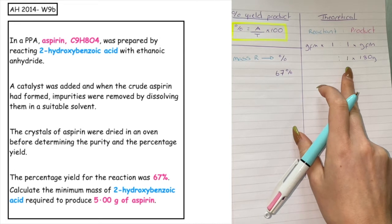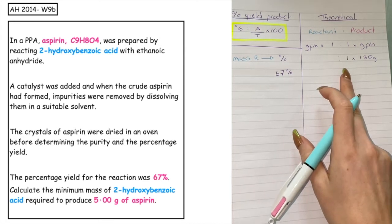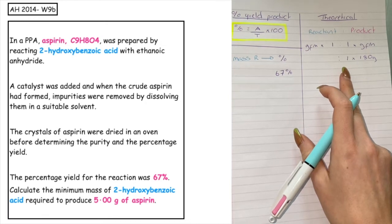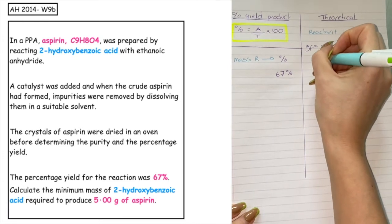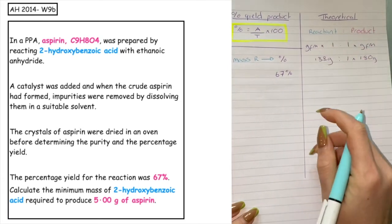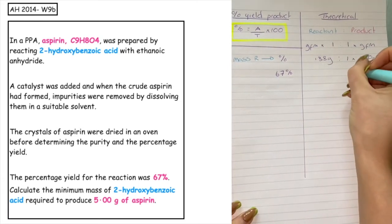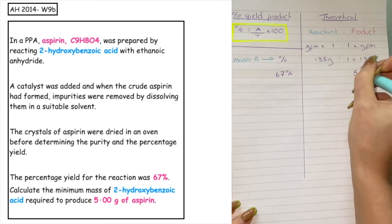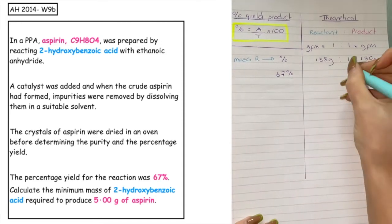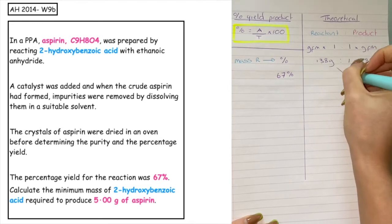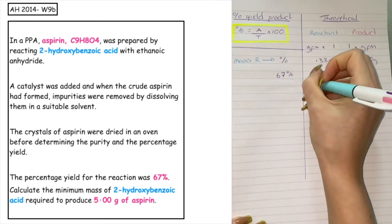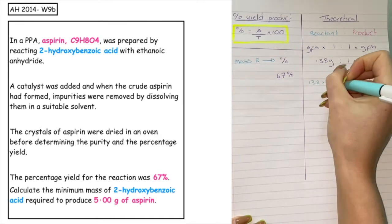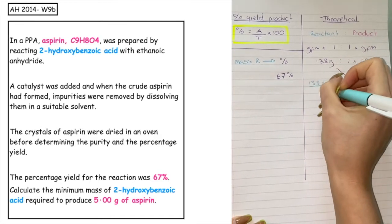The 2-hydroxybenzoic acid — in past papers you'd be expected to draw that and calculate the GFM, but now you will be given that information. The GFM of 2-hydroxybenzoic acid is 138 grams. We know we want to produce 5 grams of our product, so we proportionalise backwards to work out the mass of our reactant. To do that we calculate 138 times 5 divided by 180.